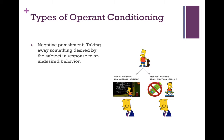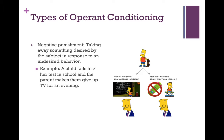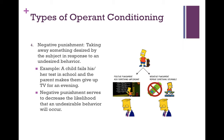Negative punishment is taking away something desired by the subject in response to an undesired behavior. An example would be a child failing a test in school and the parent making them give up TV for an evening. Negative punishment serves to decrease the likelihood that an undesirable behavior will occur.